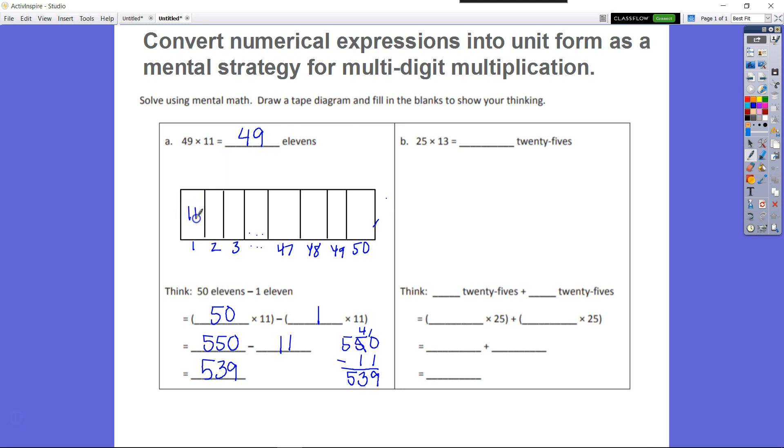So we have groups of 11. So that's 1 group of 11, 2 groups of 11, 3 groups of 11. This is going to be 4 all the way up to 46 groups of 11, 47 groups of 11, 48 groups of 11, 49 groups of 11, and 50 groups of 11.